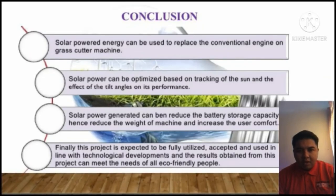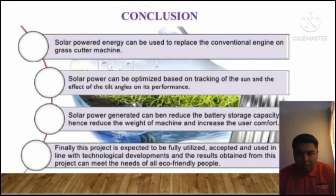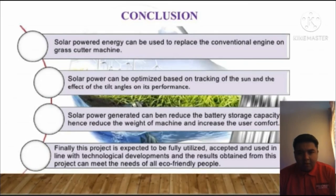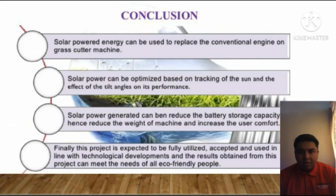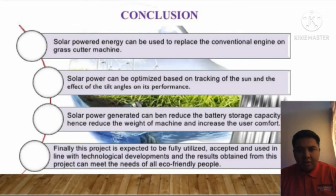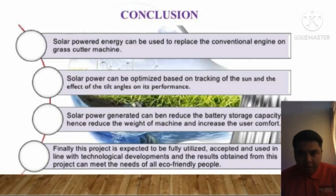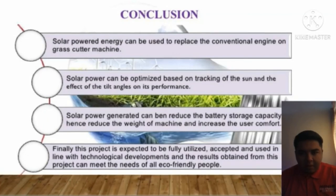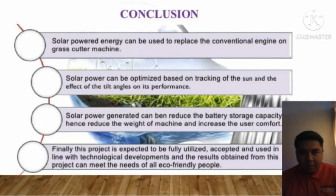Solar power energy can be used to replace conventional energy in the grass cutter machine. Solar power can be optimized based on tracking of the sun and the effect of the angle on its performance. Solar power can reduce the battery storage capacity required and reduce engine use, thereby increasing user comfort. For our conclusion, the project is expected to be freely utilized, aligned with technology development, and the results obtained can meet the needs of all eco-friendly people.